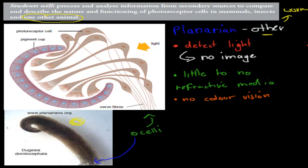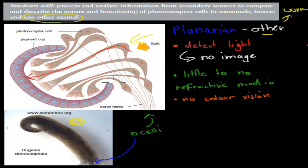What happens here is light comes in this way. It goes through these photoreceptors — these photoreceptor neurons — and hits the pigment, which is at the bottom of that photoreceptor. So there are a couple of things you should know about the planarian eye. First of all, it's really, really simple. Basically, all it does is detect light.